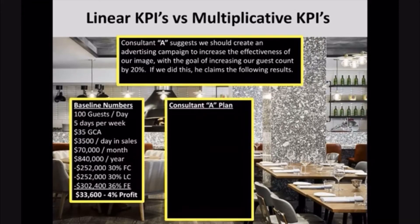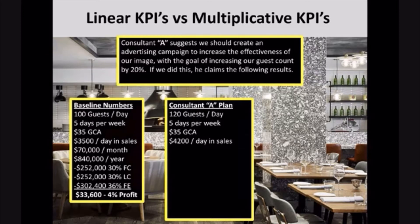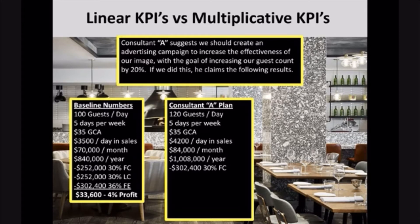His plan says we're going to increase by 20%, going from a hundred guests per day to 120 guests per day. They're still going to be open five days a week, still going to have a $35 guest check average — GCA hasn't changed at all. All they're doing is bringing in more people through this advertising campaign. That's going to take sales to $4,200 a day, so now they're at $84,000 a month or $1,008,000 per year. Food costs stay at 30%, jumping up a little bit to $300,000.